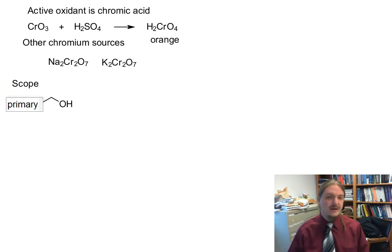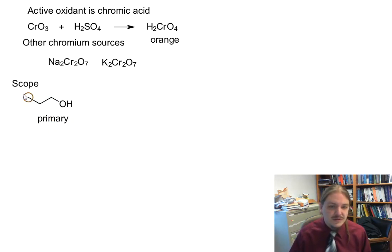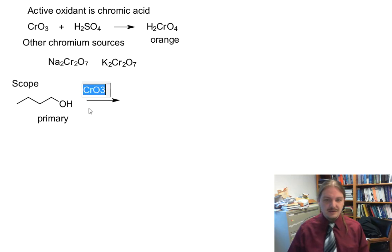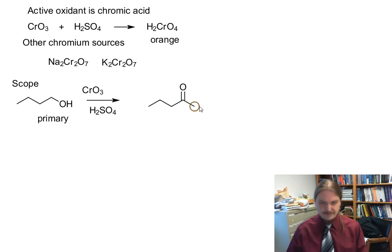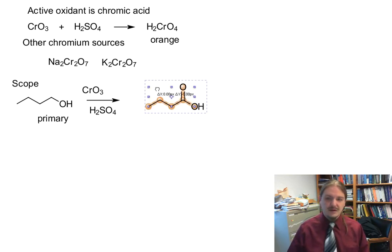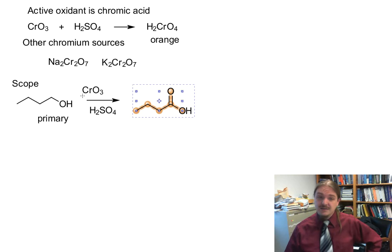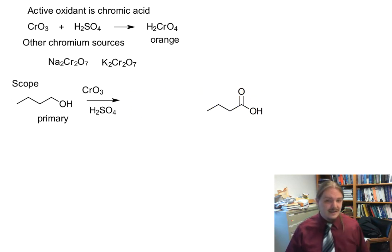So we have our primary alcohol, and let's use butanol. Butanol will react with chromic acid, CrO3 and sulfuric acid, and we get butanoic acid. So chromic acid oxidizes primary alcohols to carboxylic acids.